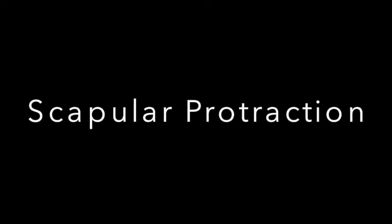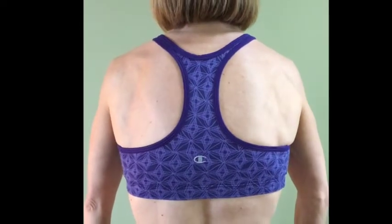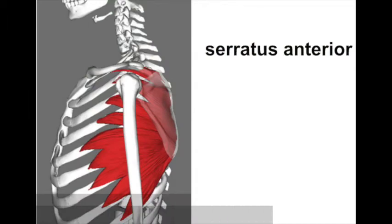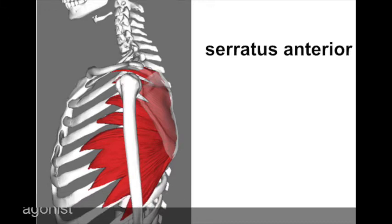Here's scapular protraction. The scapulae broaden, moving away from the spine. The agonist or prime mover of scapular protraction is the serratus anterior, which attaches to the inside edge of the scapula and ribs.